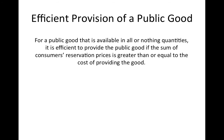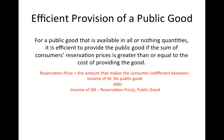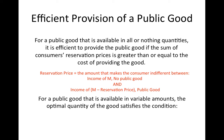So, what is the efficient level of a public good to provide? For public goods provided in all-or-nothing amounts, it is efficient to provide the good as long as the sum of consumers' reservation prices exceeds the cost of providing it. For a public good available in different quantities, the optimal quantity is where the sum of all consumers' marginal rates of substitution between money and the public good equals the marginal cost of providing the good.